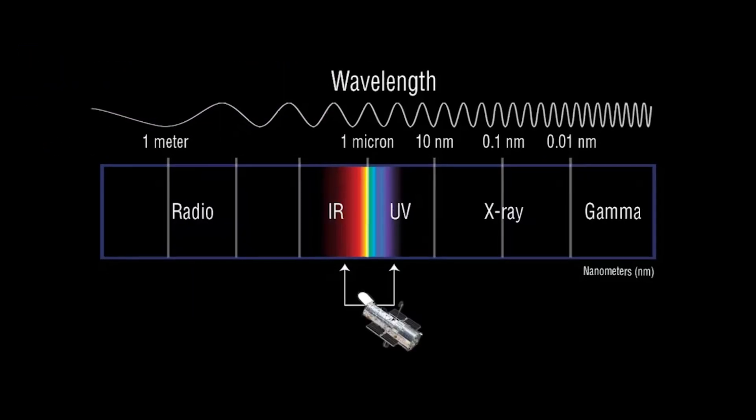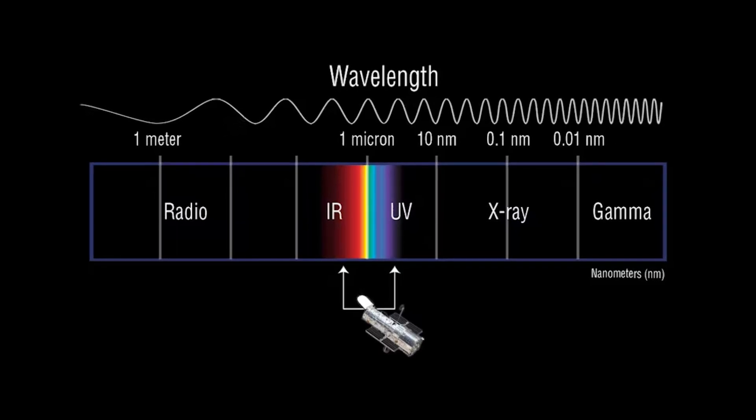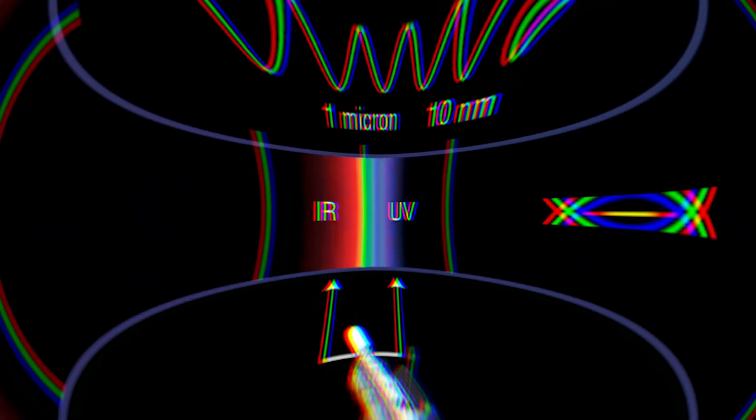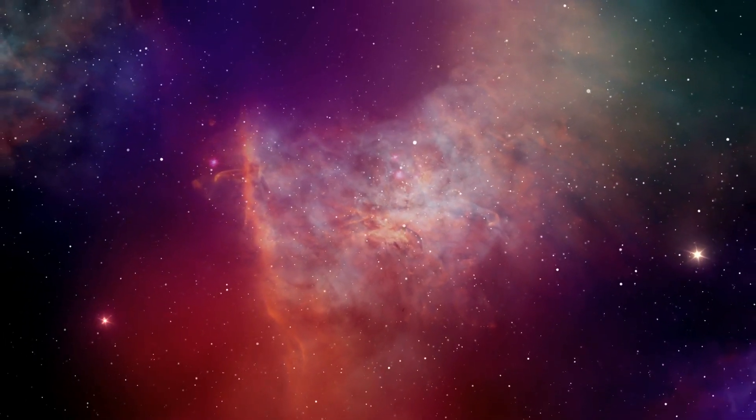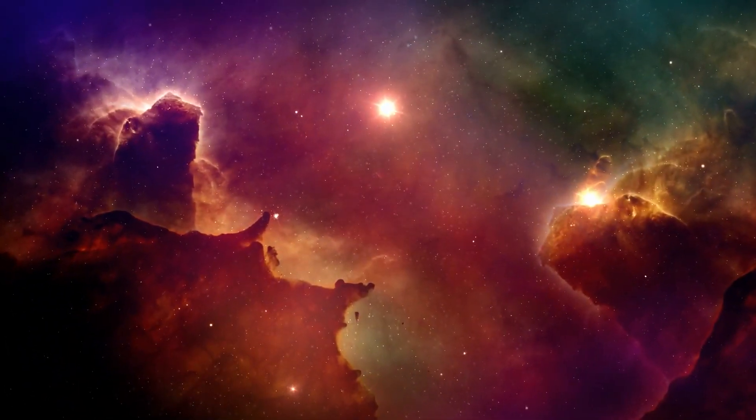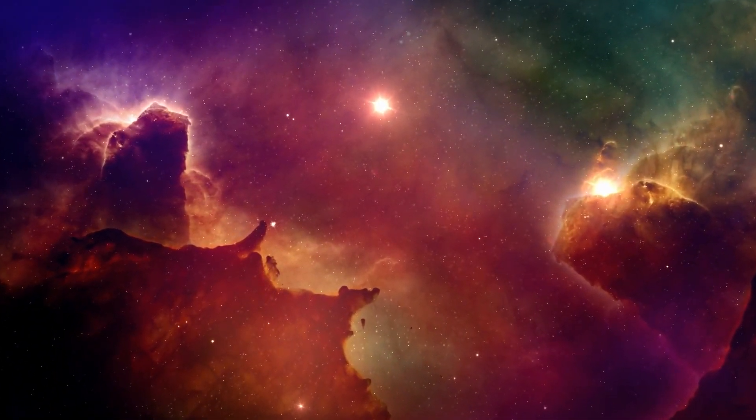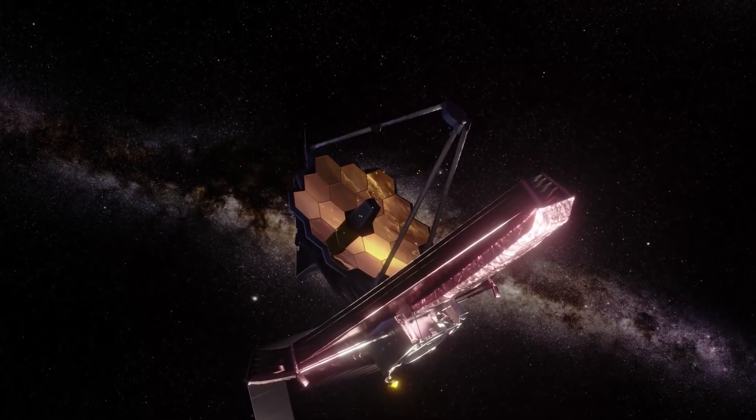You see, unlike the Hubble Space Telescope, which detects light in the visible spectrum, the JWST can see past dust and clouds in space to get to the light coming from the distant stars and galaxies. This gives it a lot of material to work with.